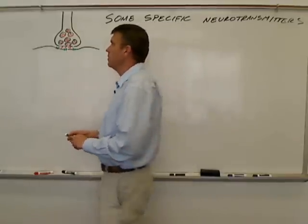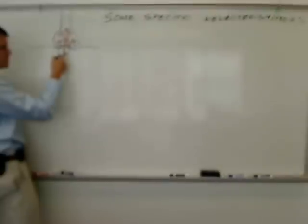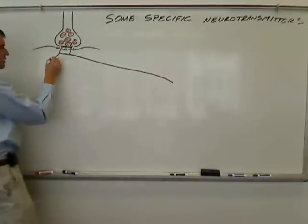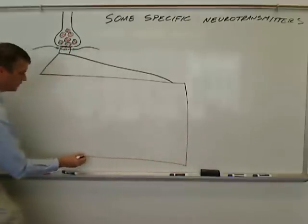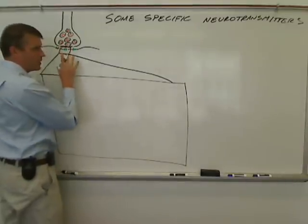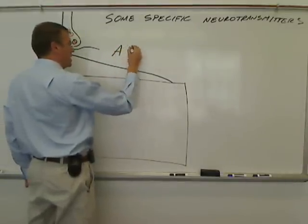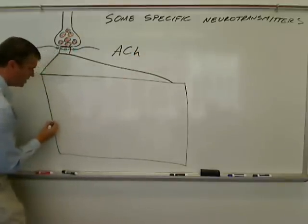So what I'm going to do for one of these neurotransmitters is take this area of the postsynaptic membrane and blow it up so we can look at what happens. The only neurotransmitter I'm going to do this with is acetylcholine, or ACH. So here's my membrane.